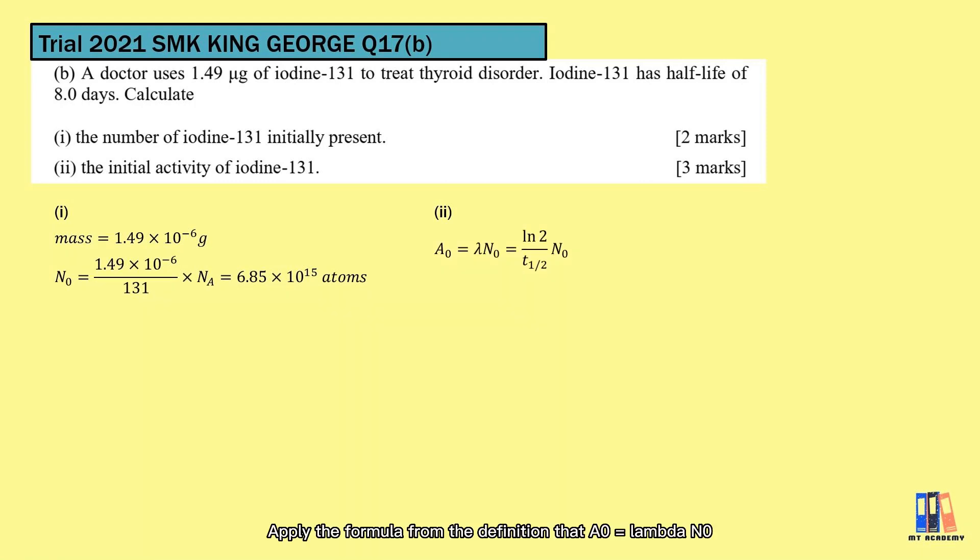Next is the initial activity. Apply the formula from the definition that A₀ = λN₀, and also the formula of decay constant. The answer is 6.87 × 10^9 Becquerel.